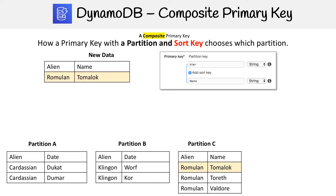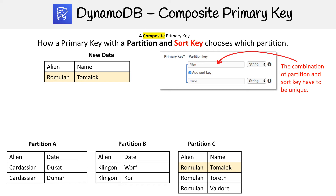We're going to define our key, and you'll notice that we're filling in both the partition key and also the sort key value. What's important is that the combination of the partition and sort key have to be unique. In the case of a simple primary key, we wanted the partition key to be unique, but with composite keys it has to be unique in the scope of the two combined.